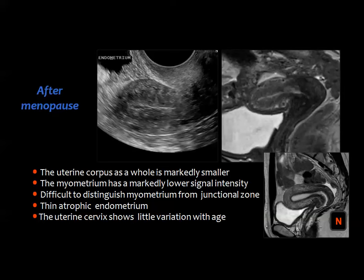After menopause, the uterus becomes smaller and the myometrium has a lower signal compared to the reproductive period. The postmenopausal uterus shows relatively darker myometrium, the junctional zone is not well defined, and the endometrial cavity is small or atrophic. The cervix, however, may maintain its normal size and is not liable for the same changes.